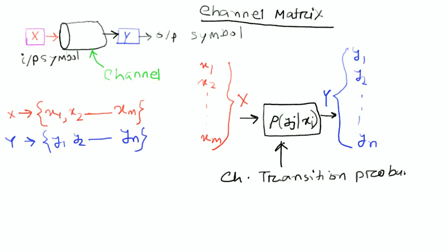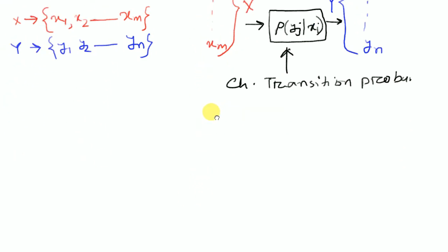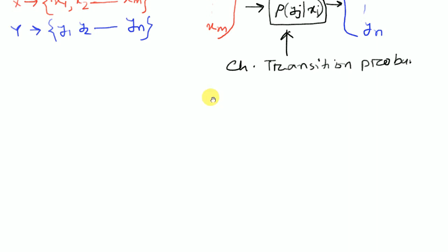Now we are going to learn the channel transition probability. Now we are going to learn the channel matrix. The probability of y given x is equal to the channel matrix, which we will now construct.